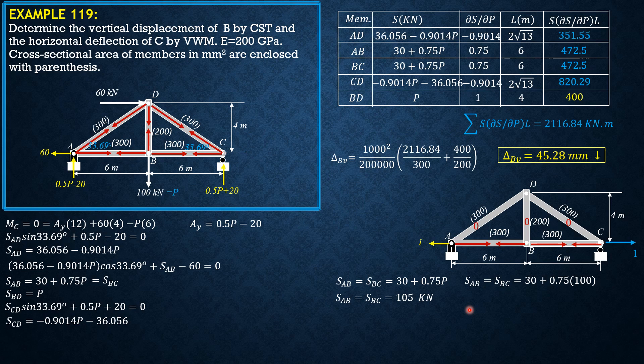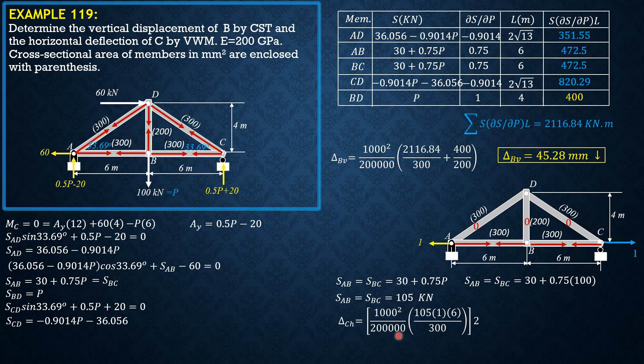Take note that the displacement is summation of SUL over AE, where U is 1 for members AB and BC. So if we concentrate on AB, we multiply the displacement by 2. So delta C horizontal equals 1000 squared over 200,000 times quantity S 105, U 1, length 6 over area 300. This is for member AB alone, so for BC we multiply it by 2 because they are equal. Therefore delta CH is equal to 21.00 mm rightward.